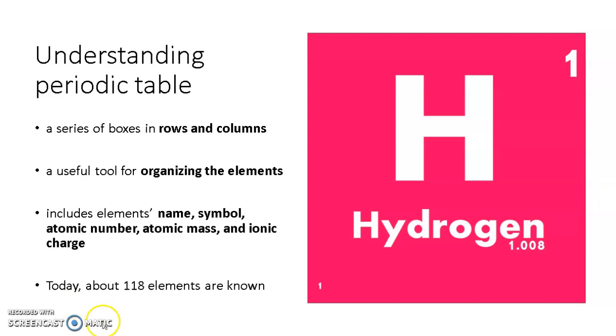Each box includes the element's name. We have an example of hydrogen here, so that's hydrogen, the name. The element's symbol which is H right here. The element's atomic number which is 1 right here. Atomic mass which is 1.008, and some periodic tables might include ionic charges and other information.